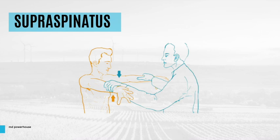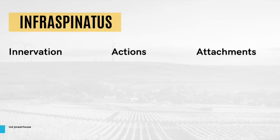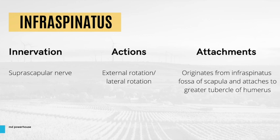Now that you know everything about the supraspinatus and arm abduction, let's move on to the infraspinatus. There are three main things to know: the nerve that innervates it, its actions, and its attachments. The infraspinatus is innervated by the suprascapular nerve. Its action is external rotation or lateral rotation. For its attachments, it originates from the infraspinatus fossa of the scapula and attaches to the greater tubercle of the humerus — just like the supraspinatus, both attach to the greater tubercle.